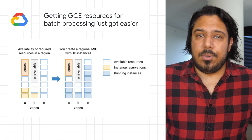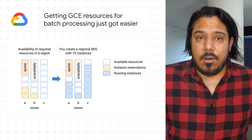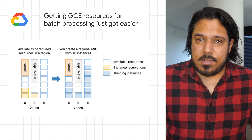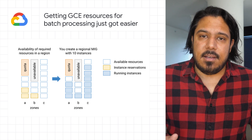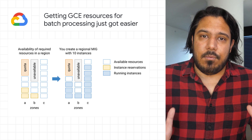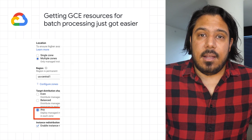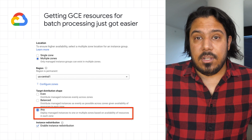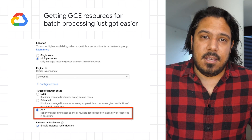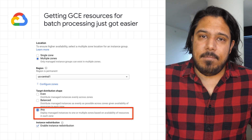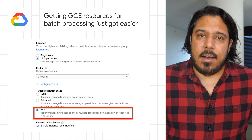Getting Compute Engine resources for batch processing just got easier. We're excited to announce a new method of obtaining Compute Engine instances for batch processing that accounts for availability of resources in zones of a region. Now available in preview, you can use this new method by specifying the AnyValue in the GCE API or by setting the value of the instance group via the gcloud CLI.